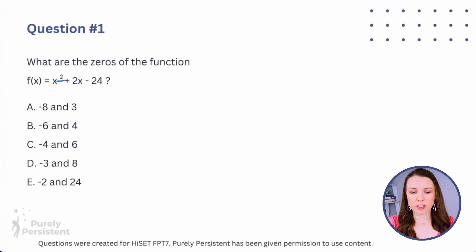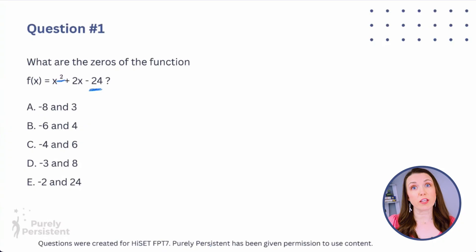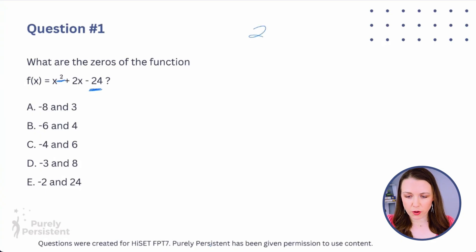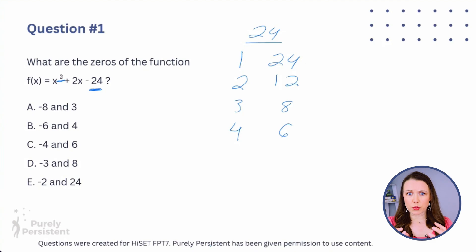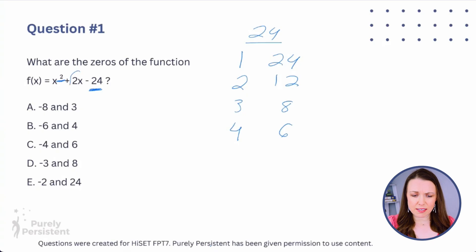The first thing we want to do is look at this 24 and figure out its factors — what numbers multiply to give 24. So: 1 and 24, 2 and 12, 3 and 8, 4 and 6. Those are all the pairs that multiply to give me 24. Now I have to think about which pair I can add or subtract to get the positive 2 in the middle.